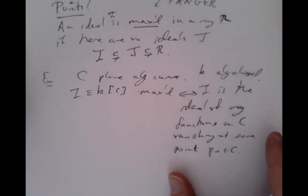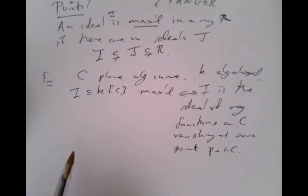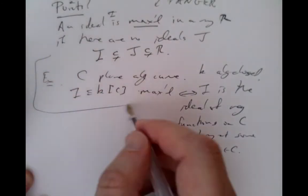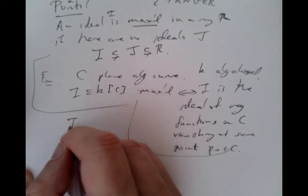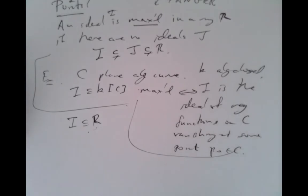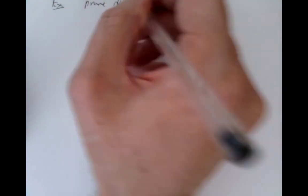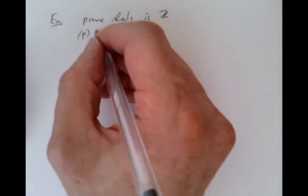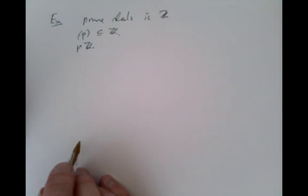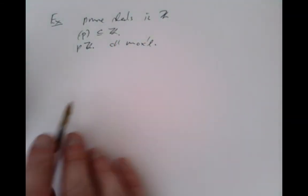This leads to a perverse but powerful situation: we now have an abstract definition of a maximal ideal for any ring, and the maximal ideals are like points in some geometric structure associated to the ring. For the integers, we found that the prime ideals are exactly the ideals generated by prime numbers — the ideals pZ for prime p. It's easy to check they're all maximal. So for the integers, something special happens: all prime ideals are maximal.